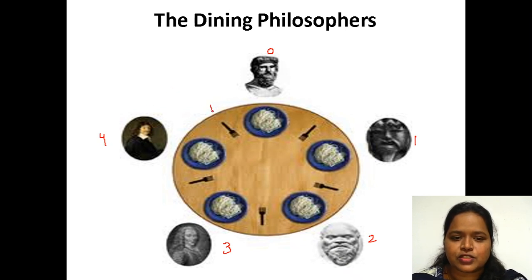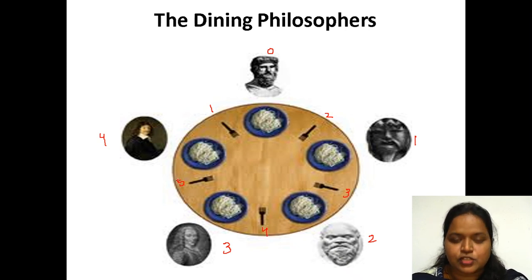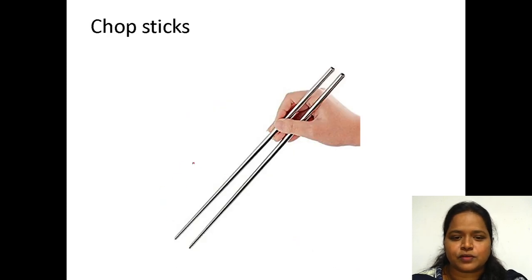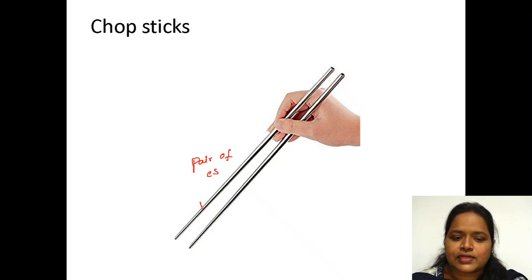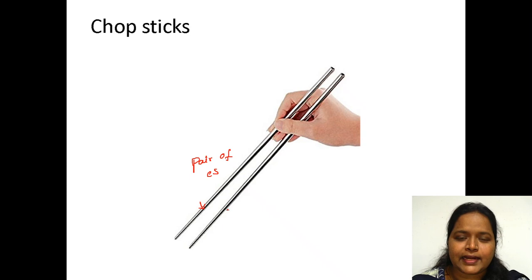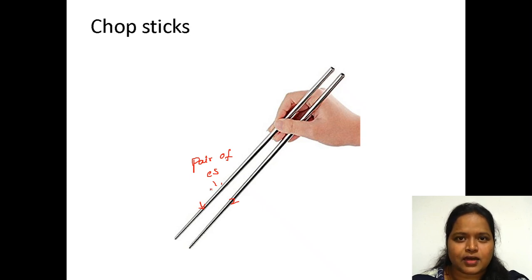There is a 1st chopstick, 2nd chopstick, 3rd chopstick, 4th chopstick, and 5th chopstick. A pair of chopsticks means two chopsticks together. Between these five philosophers, only a single chopstick has been placed — not a pair. If any philosopher wants to eat, he needs to get two chopsticks: one and two. Then only he will be able to eat the rice in the bowl.